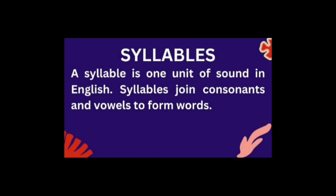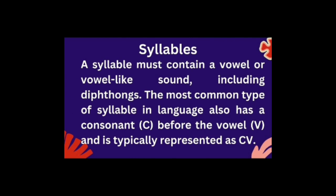Another important concept is syllable. A syllable is one unit of sound in English. Syllables join consonants and vowels to form words, but it is mandatory for each syllable to have a vowel sound. A syllable must contain a vowel or a vowel-like sound, including a diphthong — two vowels combined making one sound. The most common type of syllable in English has a consonant (C) before the vowel (V), typically represented as CV.